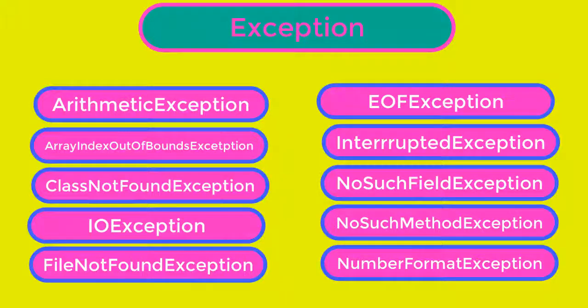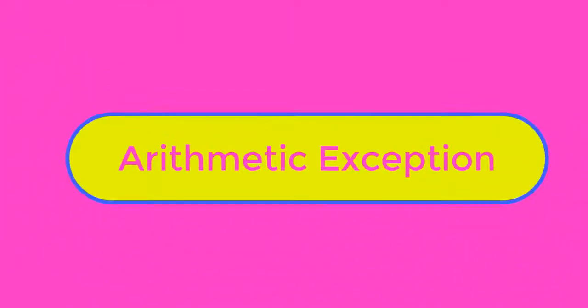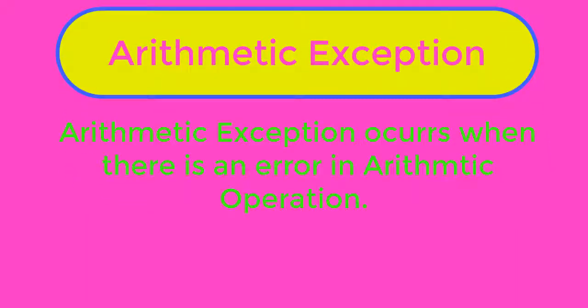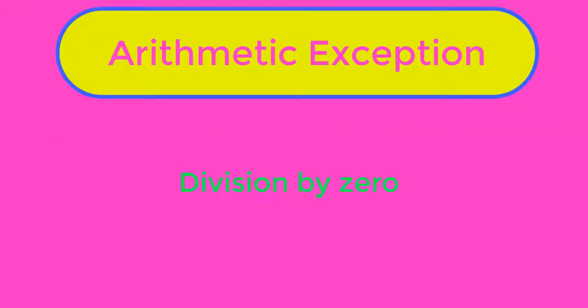Now let's look at some exceptions in code. ArithmeticException occurs when there is an error in an arithmetic operation. An example is division by zero. Now let's look at an example of a program that throws an ArithmeticException.